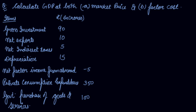In this video we will be studying about the expenditure method numericals and how to use the expenditure method in order to calculate national income. In this question, we are given items through which we can use the expenditure method. They've asked us to calculate GDP at market price and GDP at factor cost.